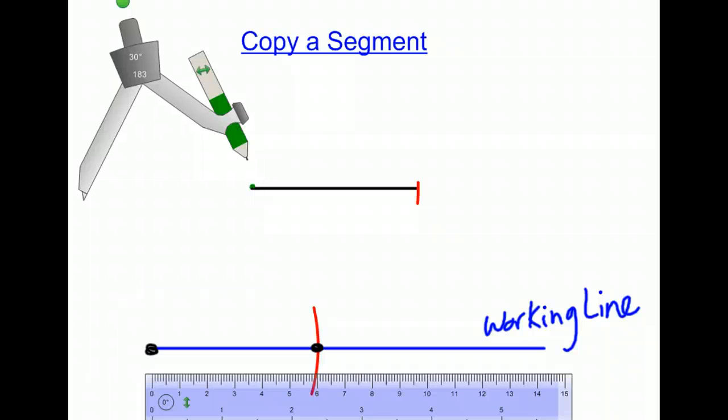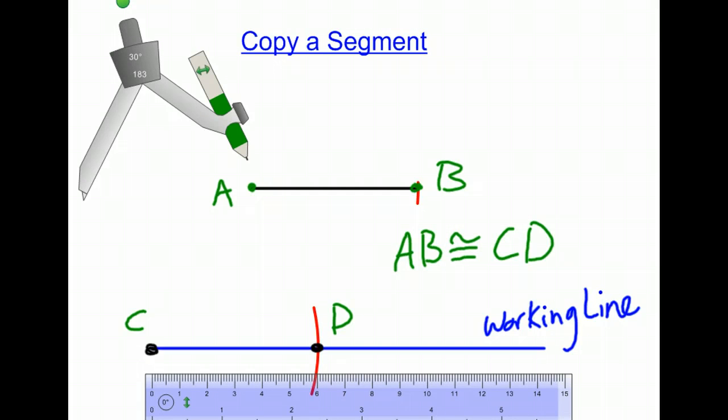Let's say the beginning segment was called AB and the second segment that I just copied is CD. Since we copied the segment using the compass, AB is congruent to CD.